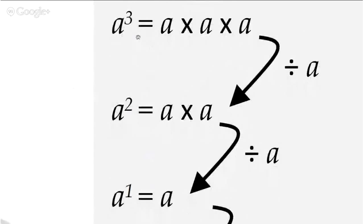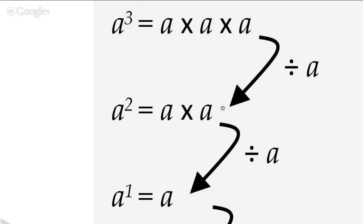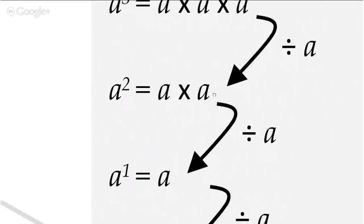We need to begin with this: a to the power three equals a times a times a. We know that already. And we also know a to the power two equals a times a. To get from a times a times a down to a times a, we need to divide by a — we need to get rid of the times by a. So that's what you need to do. Nothing complicated so far.